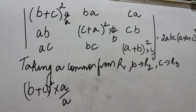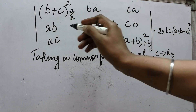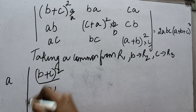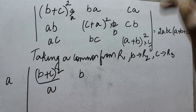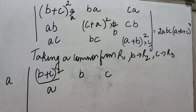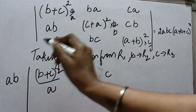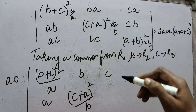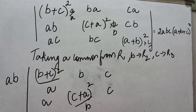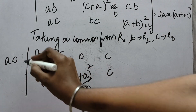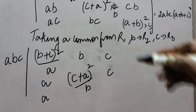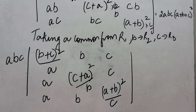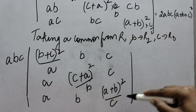This you need not show — just it should be clear in your mind. So if I take a common from the first row, what is left: (b+c)² divided by a, then b, then c. In the second row, b comes out and we have a, then (c+a)² divided by b, then c. Coming to the third row, c comes out and we have a, then b, then (a+b)² divided by c. This is how I have taken a, b, c common and the remaining values are these.